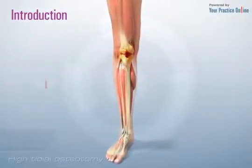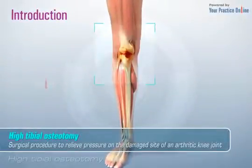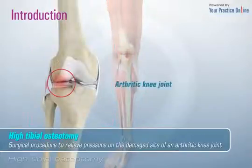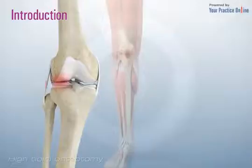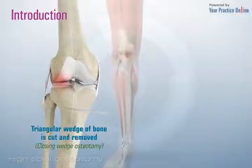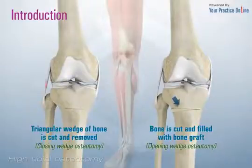High tibial osteotomy is a surgical procedure to relieve pressure on the damaged site of an arthritic knee joint. In high tibial osteotomy, a triangular wedge of bone is cut at the upper end of the tibia and either removed or filled with bone graft depending on the patient's needs.